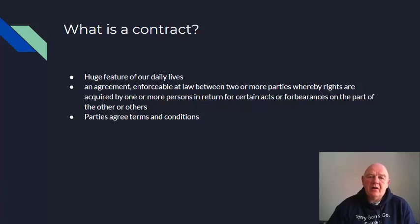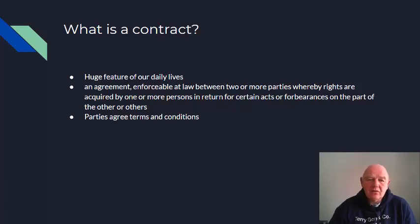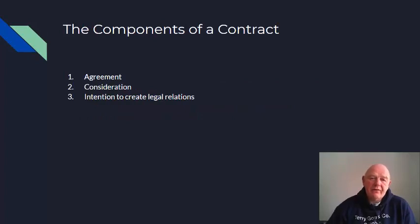The first thing you need to know about contract law is: what is a contract? It's a huge feature of our daily lives. The legal definition is: an agreement enforceable at law between two or more parties whereby rights are acquired by one or more persons in return for certain acts or forbearances on the part of the other or others. There are three components of a valid enforceable contract: one, agreement between the parties; two, consideration; and three, intention to create legal relations.